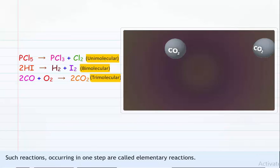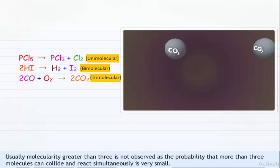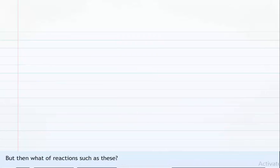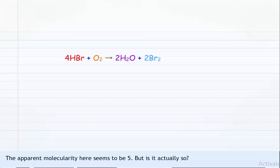These reactions occurring in one step are called elementary reactions. Molecularity greater than three is not observed, as the probability that more than three molecules can collide simultaneously and react is very small. But what of reactions such as: four moles of hydrogen bromide reacting with a mole of oxygen to form two moles of water and two moles of bromine? The apparent molecularity here seems to be five — but is it actually so?